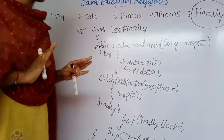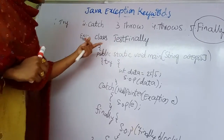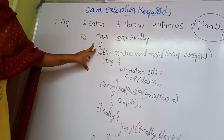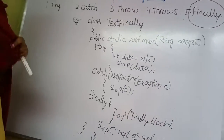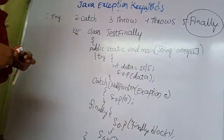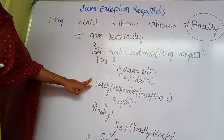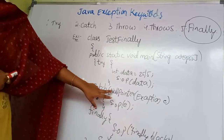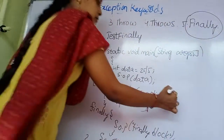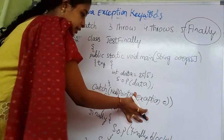Here is the example program. The class name is TestFinally. It has a public static void main method. Inside the main method, we can write a try block. Inside the try block: int data = 25 / 5, and it will print System.out.println(data). After that, the catch block catches a NullPointerException. Inside the catch block, you can print the NullPointerException reference variable.